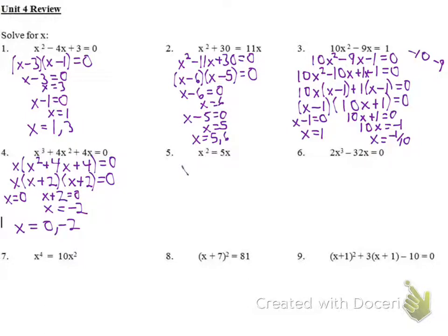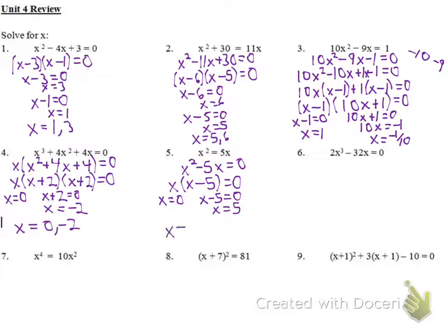Number five, I get everything to the same side by subtracting 5x from both sides: x squared minus 5x. Factor out an x, leaving x minus 5. So I have x equals 0 and x minus 5 equals 0, so x equals 5. My solutions are 0 and 5.